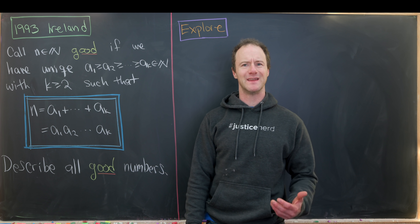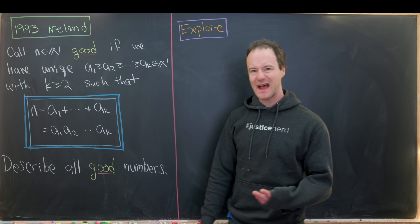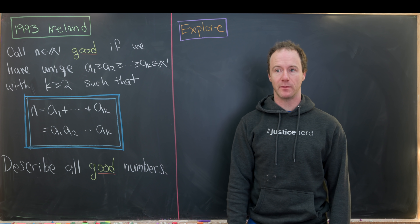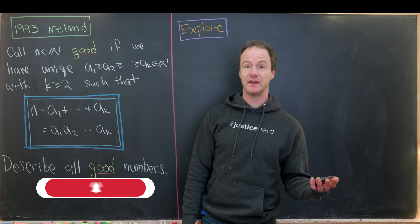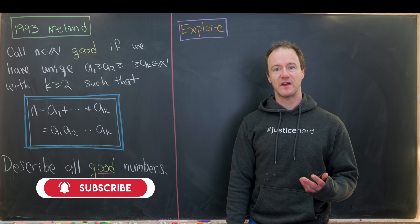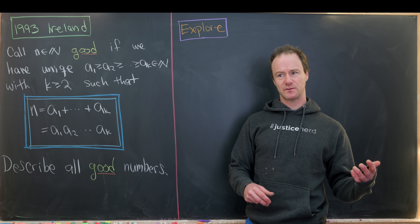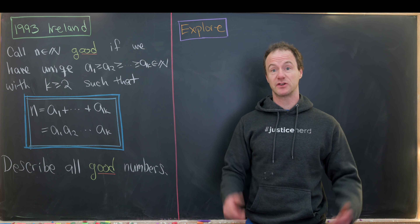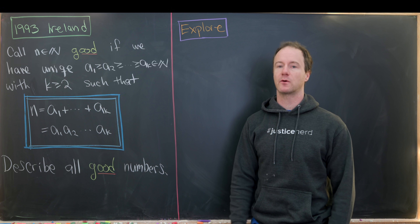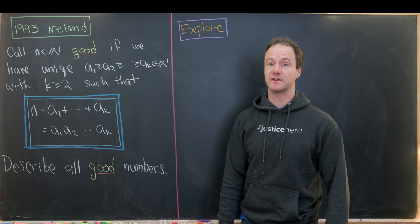Today I've got a nice problem from the 1993 Irish Math Olympiad, and it has to do with something they define as a 'good number.' This kind of notation — calling something good or nice — is fairly common in mathematics to give something an offhand characterization that doesn't hold outside of the problem or paper we're looking at. So this isn't a universal definition; it's just a definition for this problem.